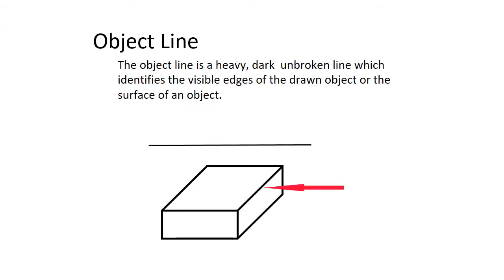An object line. The object line is a heavy, dark, unbroken line which identifies the visible edges of the drawn object or the surface of an object. If we're looking at this block, the only lines that we're going to show as dark objects are object lines. These are the ones that we can see.